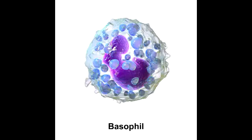The densely packed basophilic granules contain heparin, which is an anticoagulant; histamine, which is a vasodilator; and leukotrienes, whose functions include bronchoconstriction, vasoconstriction, contraction of smooth muscle, and increased vascular permeability.